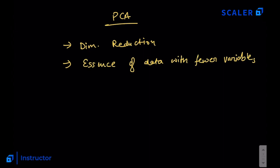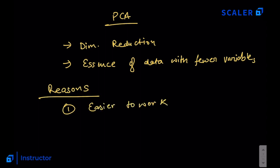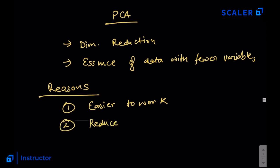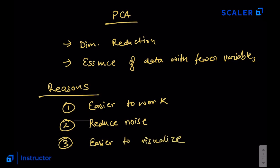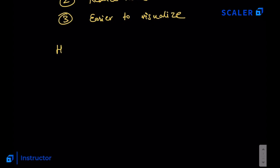Why do we need to reduce dimensions? There are a few reasons. First, with fewer dimensions, it makes your work easier — you cannot comprehend working with thousands of variables, but reducing to a couple of hundreds helps. Second, you reduce noise in the data — dimensions which add little explanation to the underlying data can be discarded. Third, it is easier to visualize data; you can plot 2D or 3D datasets, but with more dimensions it becomes very difficult to visualize what the data actually looks like.